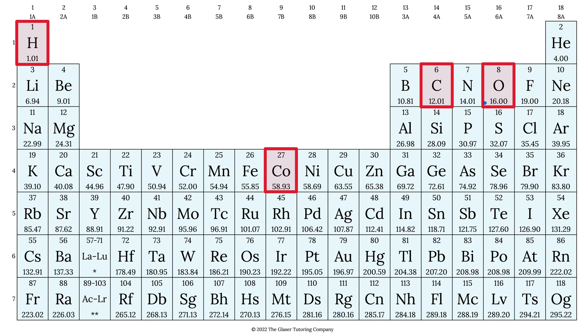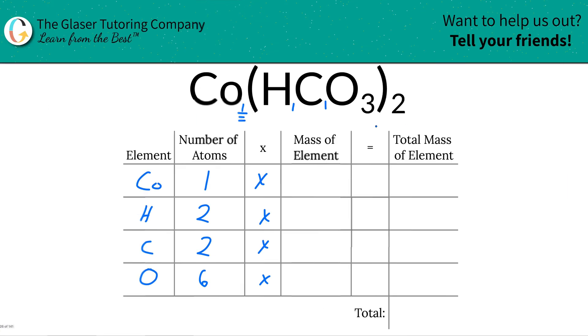These masses can represent grams per mole or AMU, depending on whether you're finding molar mass or molecular mass. So let's write them down: 58.93 for cobalt, 1.01 for hydrogen, 12.01 for carbon, and 16 for oxygen.